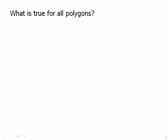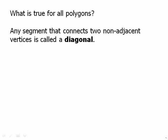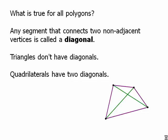What is true for all polygons? Well first of all any segment that connects two non-adjacent vertices is called the diagonal. So triangles as we found out don't have diagonals. Quadrilaterals have exactly two diagonals.